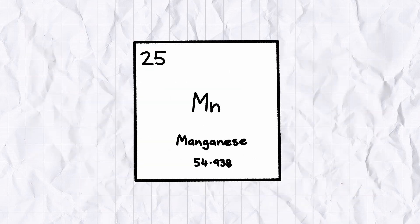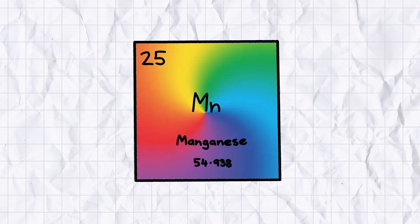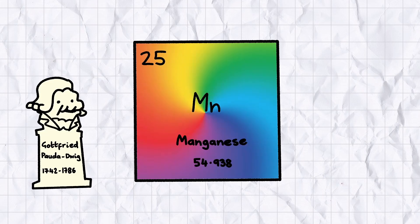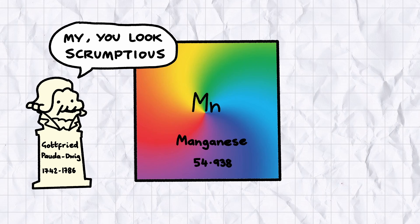All the usual hallmarks of the transition metals are here: silvery grey when pure, forms brightly coloured complexes, discovered by some 18th century randomer that died mysteriously young after years of licking toxic salt off his embroidered dueling gloves.